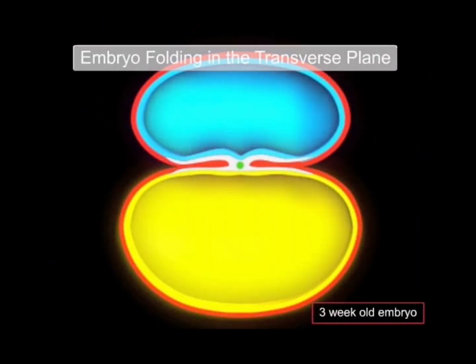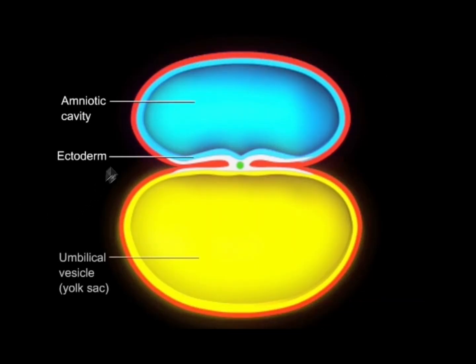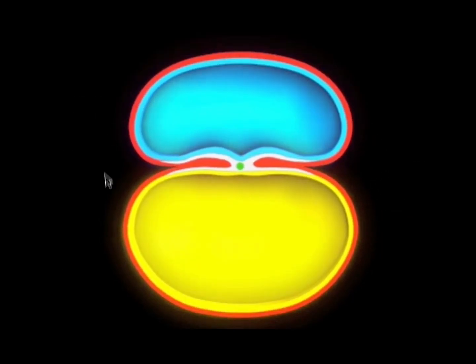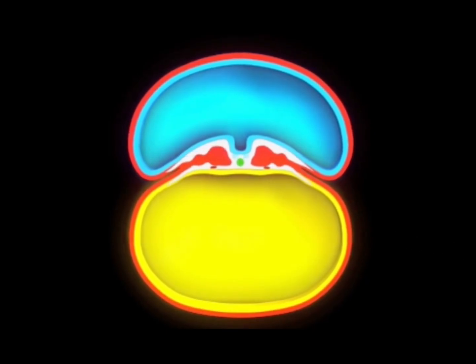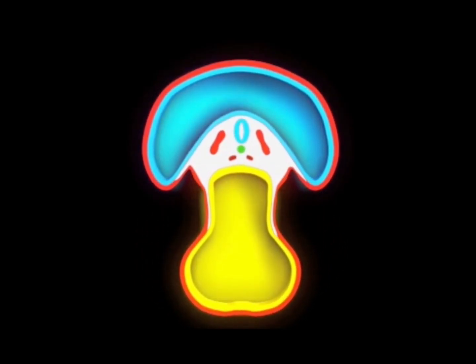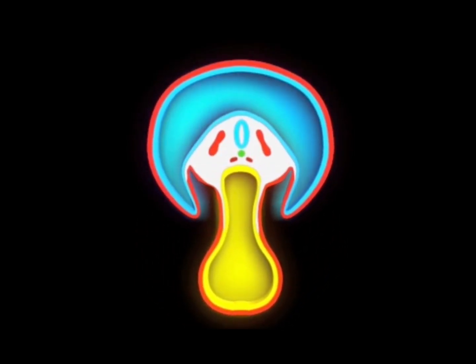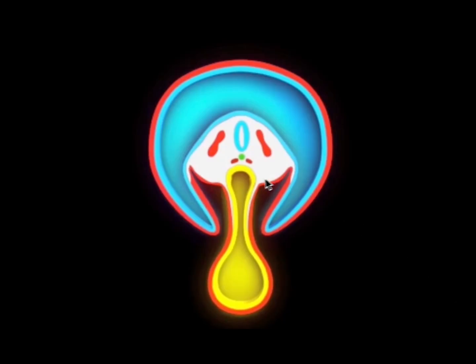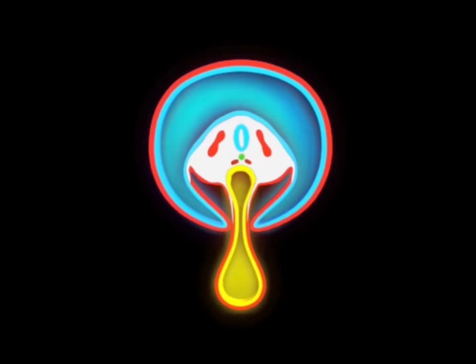Transverse folding is what will cause the lateral edges of the embryonic disc to merge in the median plane, converting the trilaminar disc into a more cylindrical embryo, as you'll see in this animation. Part of the endoderm during that process will also become incorporated into the embryo forming the midgut. There is a narrow connection between the midgut and the yolk sac — the vitelline duct — but by around week 10 it's obliterated, fully isolating the midgut within the embryo.